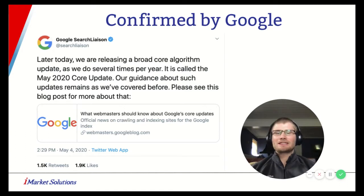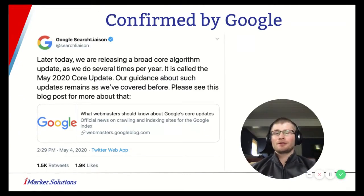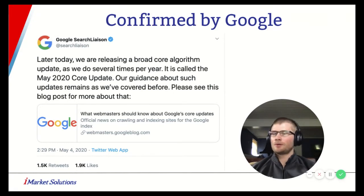This is actually the second core update that Google has made to the algorithm in 2020. The first one was back in January, and interestingly enough, they're providing the same type of resources and the same information that they did in January here in May.